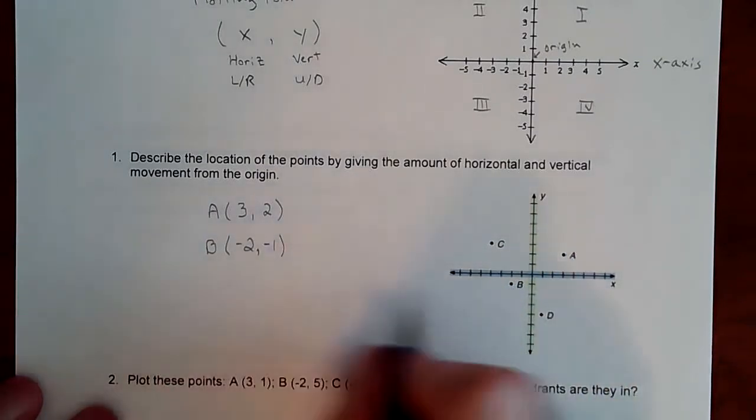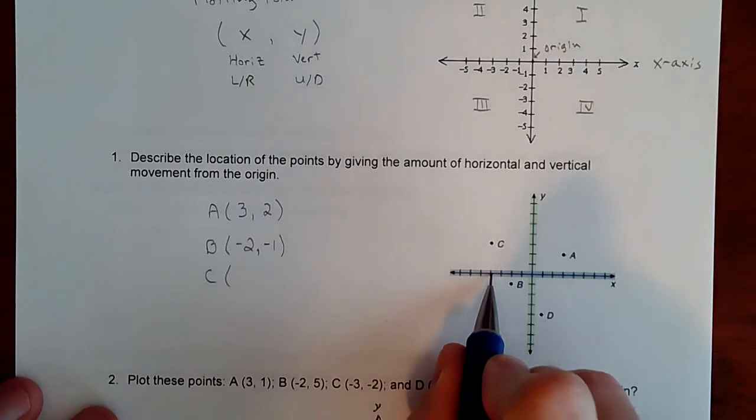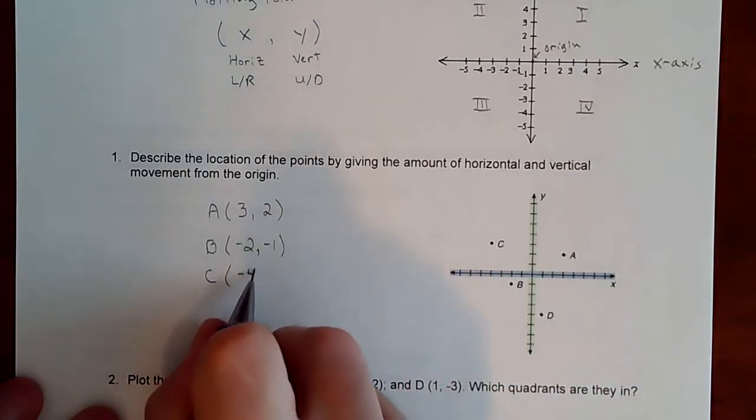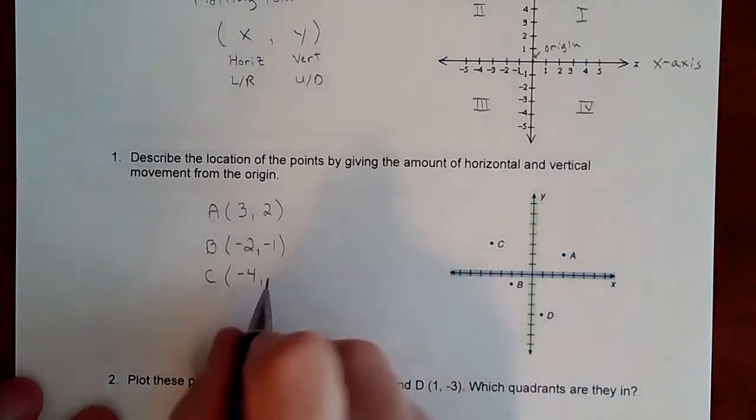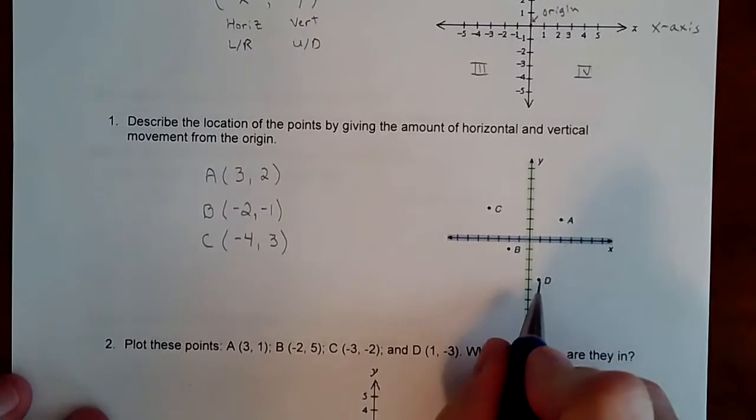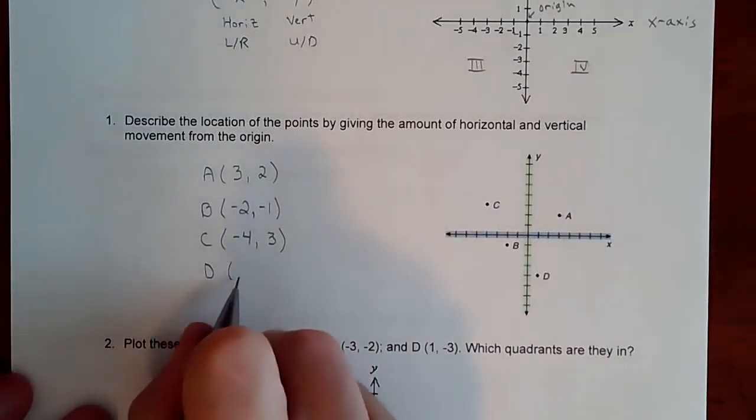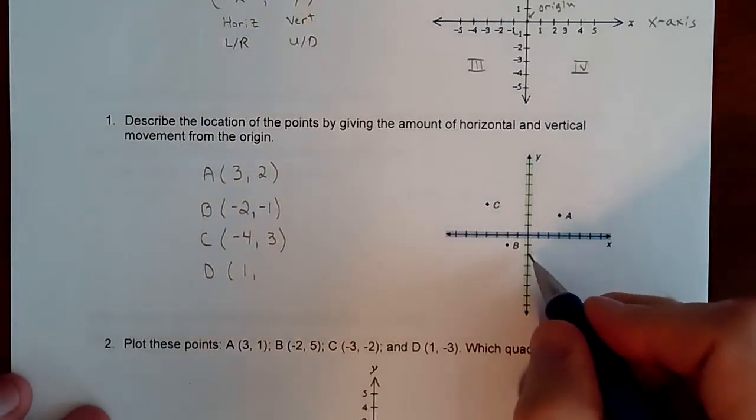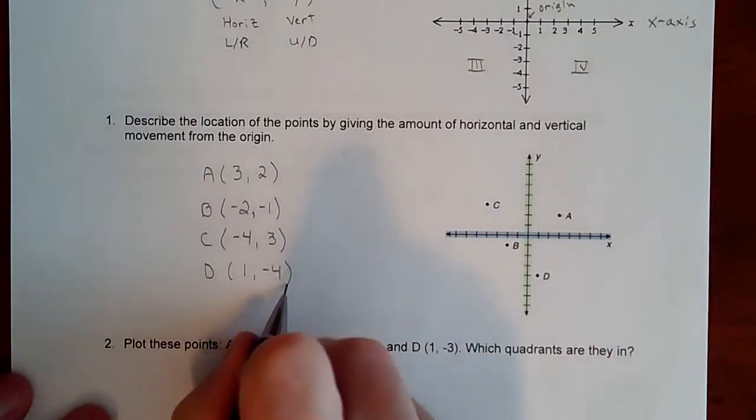Point C is one, two, three, four to the left, so negative four, and up one, two, three, giving us (-4, 3). And then point D is one to the right and one, two, three, four down, so (1, -4).